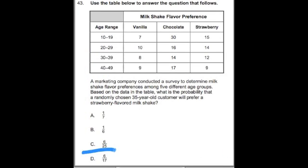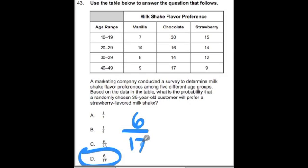The probability of that person liking strawberry is 6 out of 17 in the age group of 30 to 39. I hope you found this helpful. This is Chris Abraham from GoMath. Check out one of the Harvard Square MTEL Math workshops, or go to GoMath.com and sign up for one-to-one tutoring to get some extra math support. Thank you, have a great day!